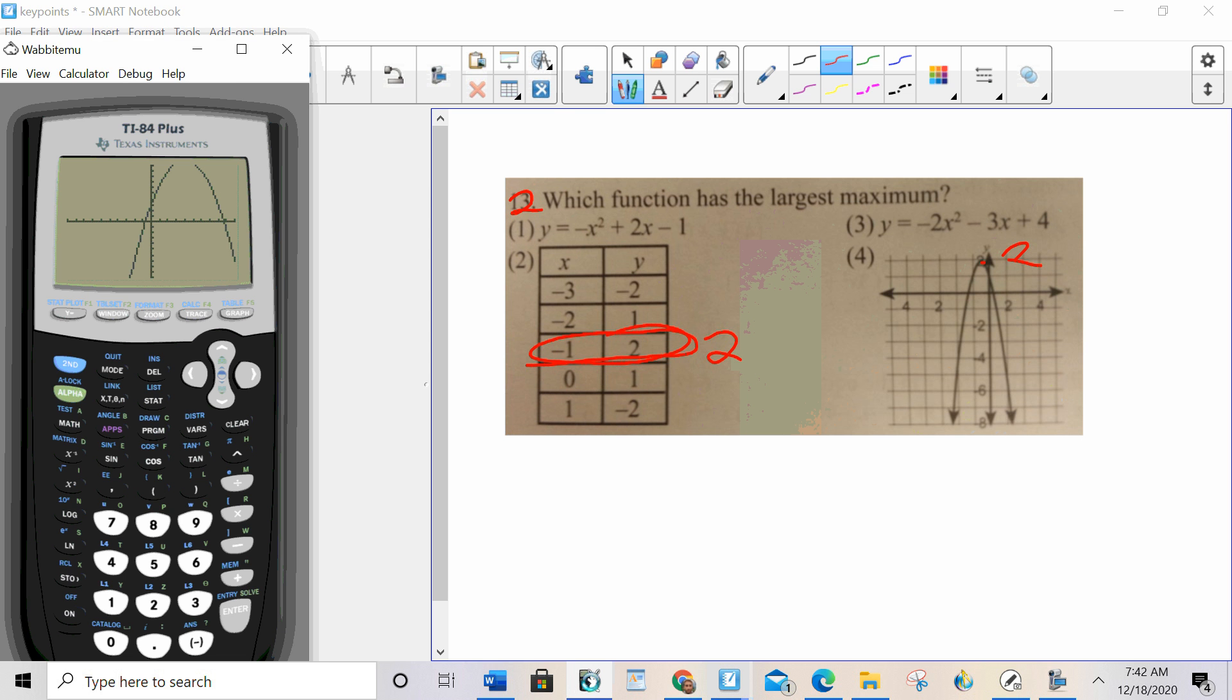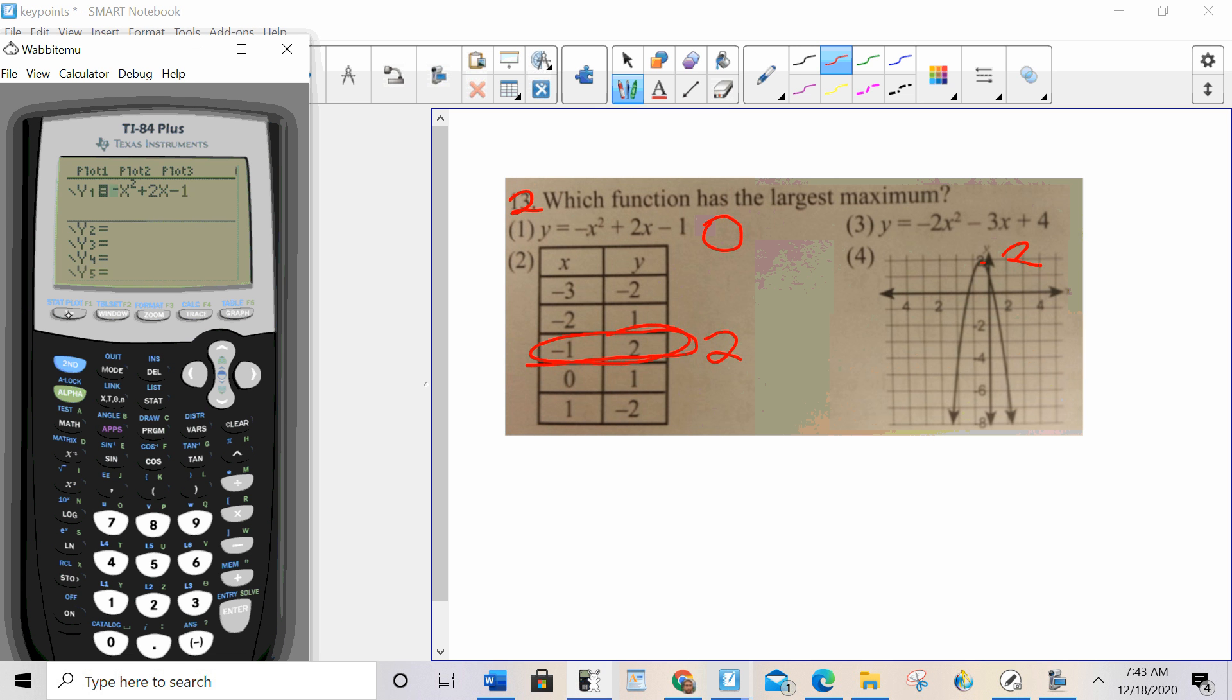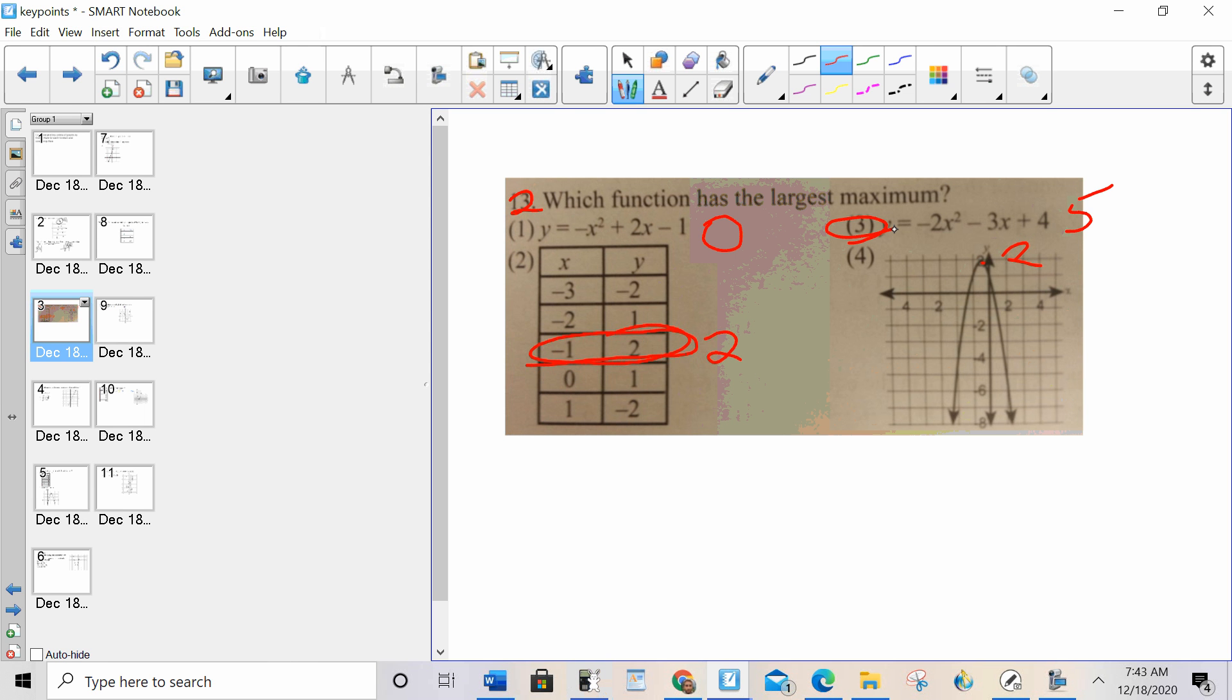So now choice one. I'm going to go to negative x squared plus 2x minus 1. I always start with zoom six. It looks like zero. And then choice three. I'm hoping it's choice three because right now there's a tie. Negative 2x squared minus 3x plus 4. And that one is definitely more than 2. It looks like about 5. Let's look at our table. The biggest number I see in my table is 5. So that might not be the actual maximum, but it's definitely the largest. It's approximate. That's my answer.